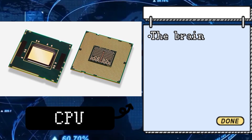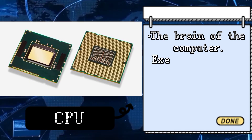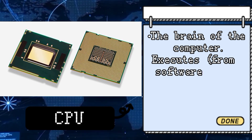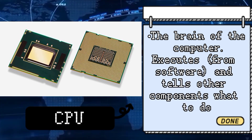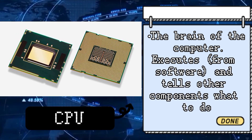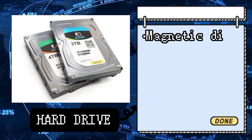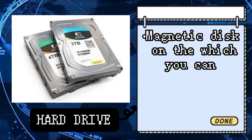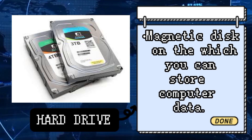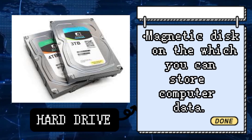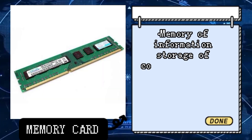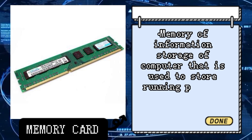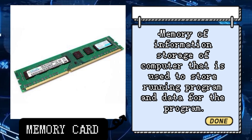The brain of the computer executes instructions from software and tells other components what to do. A magnetic disk on which you can store computer data is the memory and information storage of the computer, used to store running programs and data for those programs.